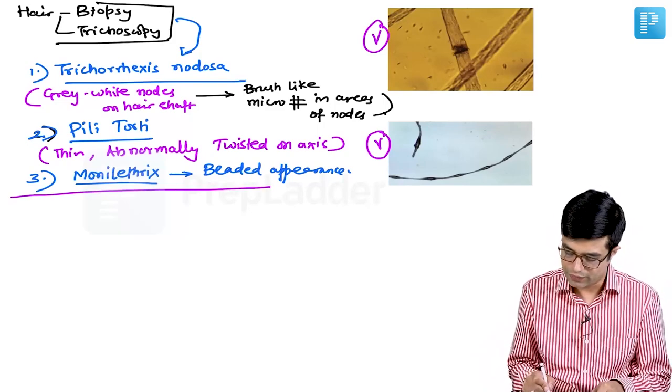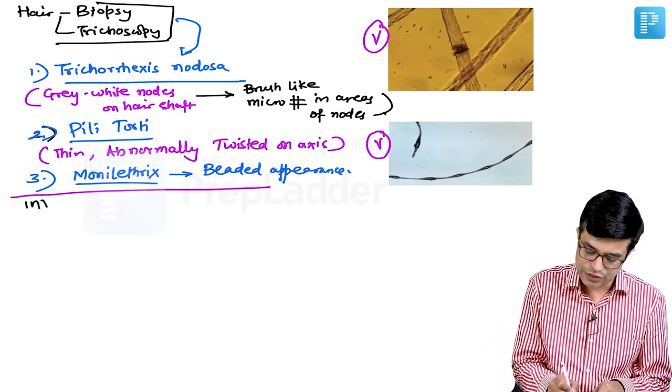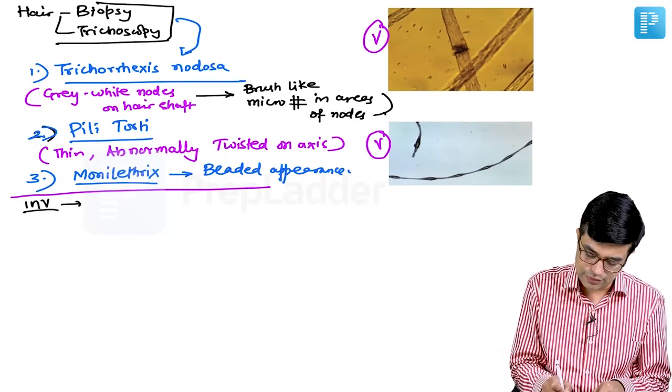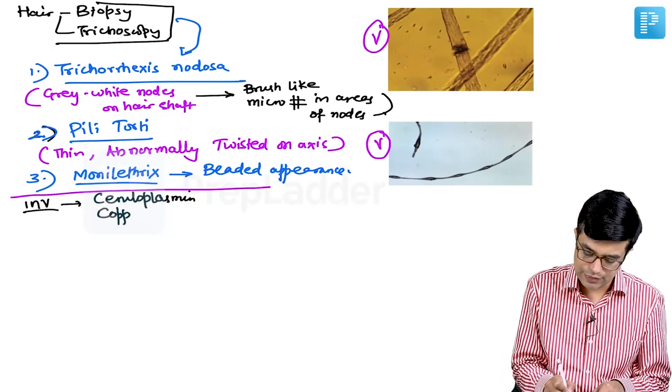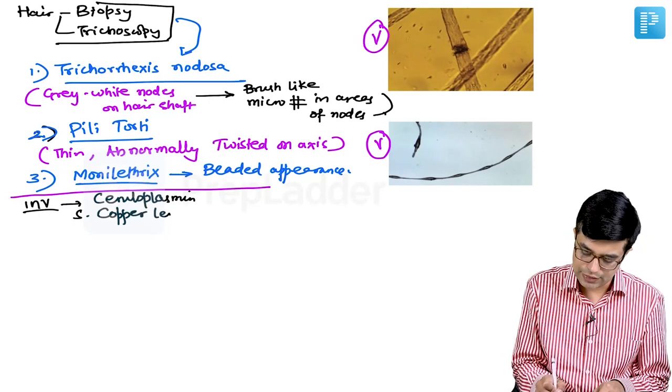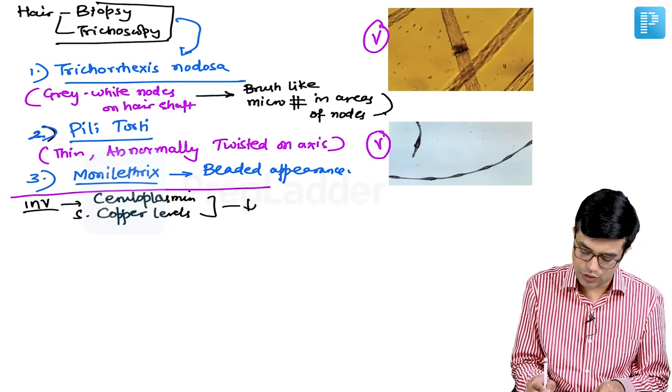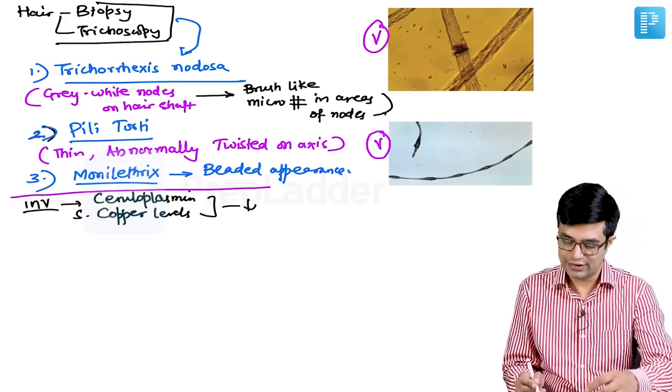When you do investigation, you will find that the ceruloplasmin levels as well as the total copper levels, serum copper levels are found to be very low. Hypocupremia is seen in these individuals.